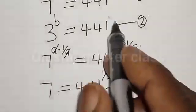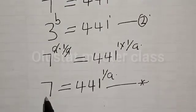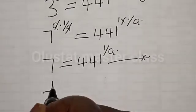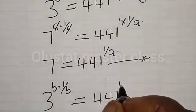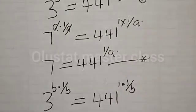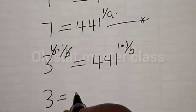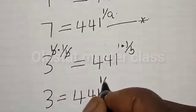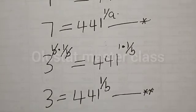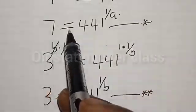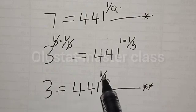Also, from equation 2, let's multiply the exponent of both sides by 1 divided by B. That is, 3 raised to power B multiplied by 1 over B is equal to 441 raised to power 1 multiplied by 1 over B. Then we have 3 is equal to 441 raised to power 1 divided by B. Let's call this equation double-star. So equation star gives 7 = 441^(1/A), and equation double-star gives 3 = 441^(1/B).